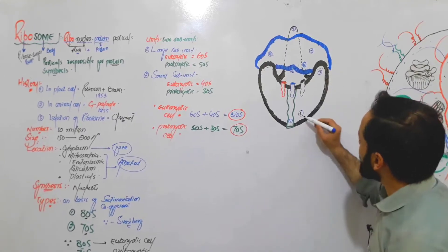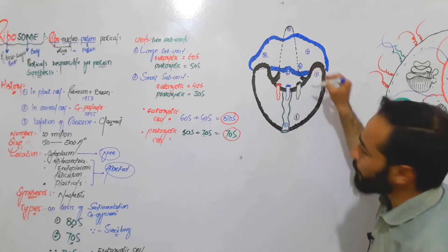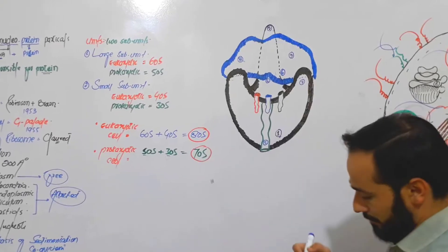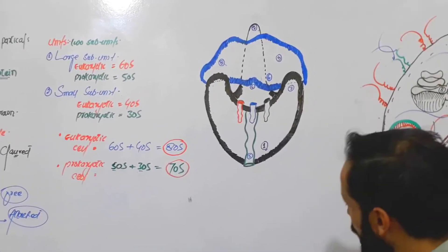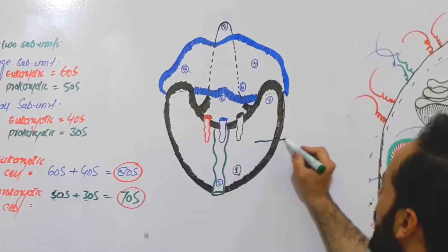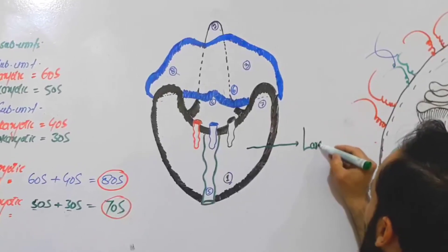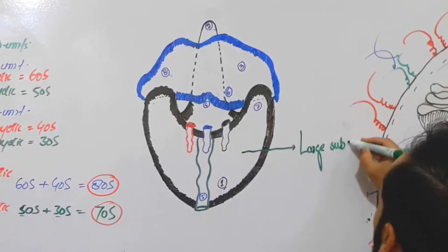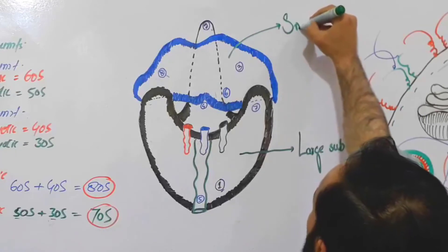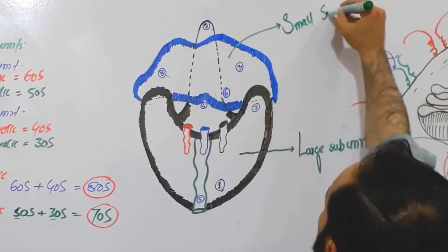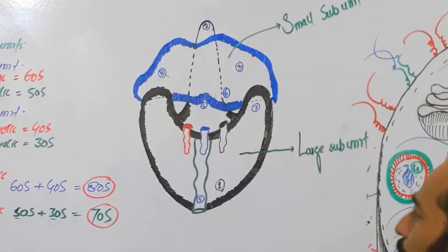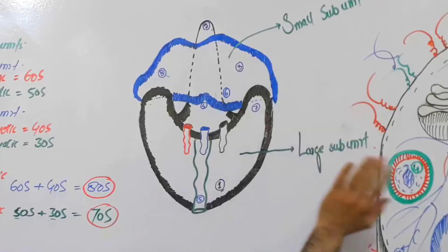I have labeled them as parts one through nine. The most important thing we should know is that the black unit is the large sub-unit and the blue unit is the small sub-unit. Ribosome is made up of two units: the small sub-unit and the large sub-unit.